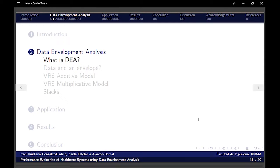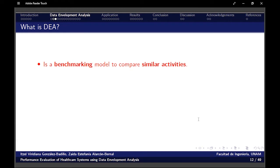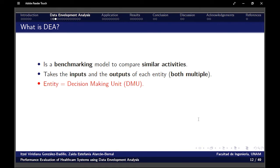But first of all, what is it? It's a benchmarking model to compare similar activities. It takes the inputs and the outputs of each entity. That entity will be something that I'm going to analyze and both could be multiple. As my activity is, I can choose whatever inputs and whatever outputs I need, the things to describe that phenomenon. And that entity, let's call the decision-making unit. And the observations that will be compounded by the inputs and the outputs, both of them.